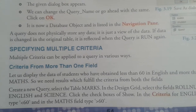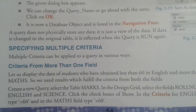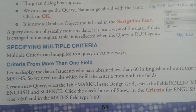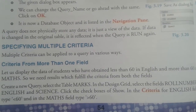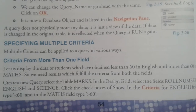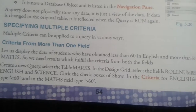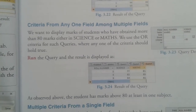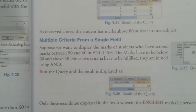For example, let us display data of students who scored less than 60 in English and more than 16 in Maths — we need a result that fulfills criteria from both fields. Creating a new query: select the table Marks in the design grid, select the fields role number, English, Science, Maths, then in the criteria row for the English field fix the criteria. After that, run the query and the result is displayed.